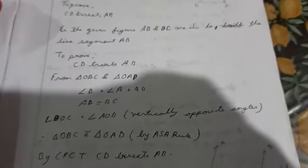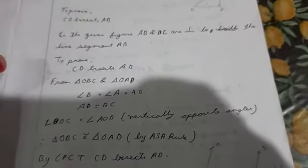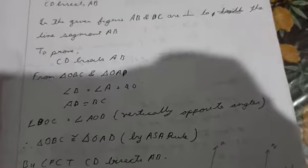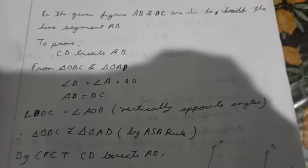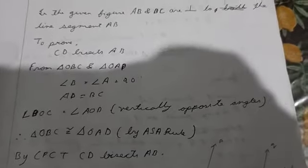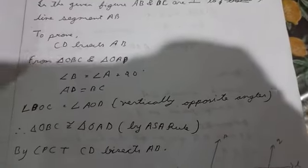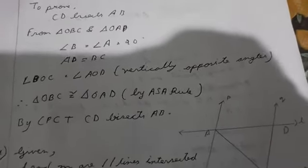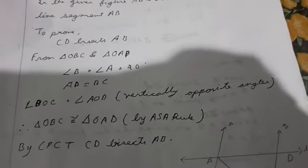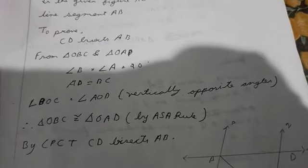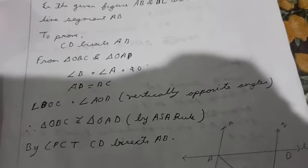From triangle OBC and triangle OAD: angle B and angle A are 90 degrees, side AD is equal to side BC, and angle BOC is equal to angle AOD by vertically opposite angles — a property from the lines and angles chapter. With two angles and one side equal, this follows the AAS rule. Therefore, by CPCT, CD bisects side AB.